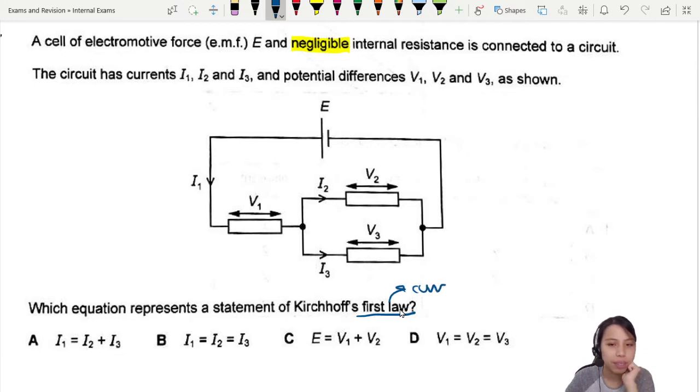about current. So anything that has voltage, I can straight away throw out the window. We are not looking at voltage here, current. We need to look at current at a junction. Kirchhoff's first law